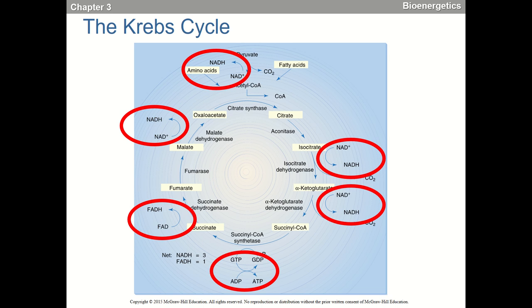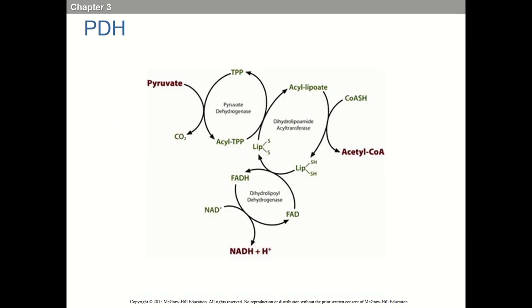The pyruvate dehydrogenase reaction involves several cofactors — notably thiamine pyrophosphate (TPP), a B vitamin. Part of the idea behind energy drinks giving you a lot of thiamine is that potentially it can make this whole pyruvate dehydrogenase reaction go faster, since thiamine is an energetically important water-soluble vitamin. That's actually how products like Monster and Rockstar are formulated — whether it works is debatable, but it's interesting.